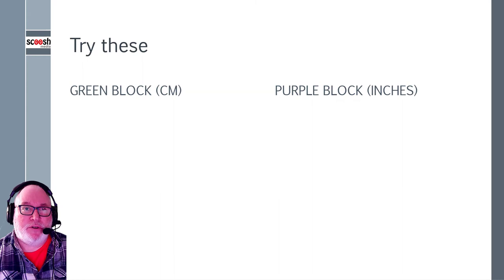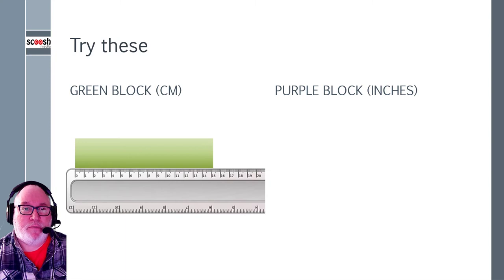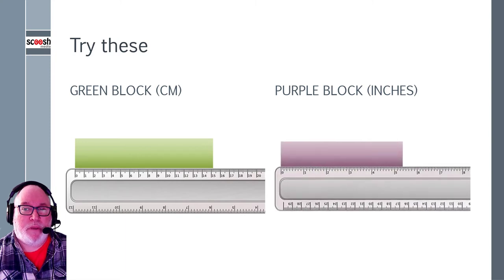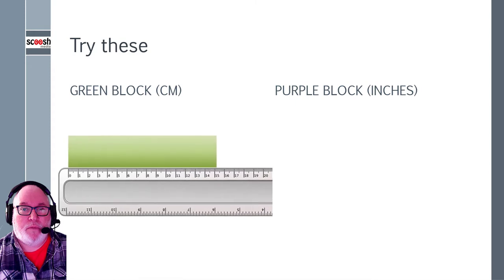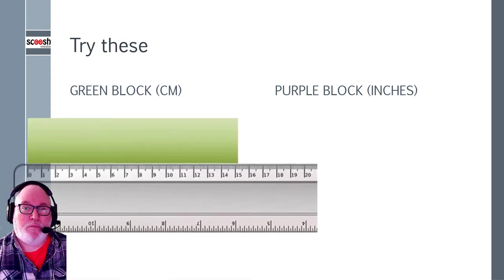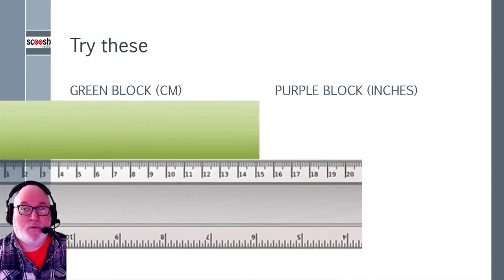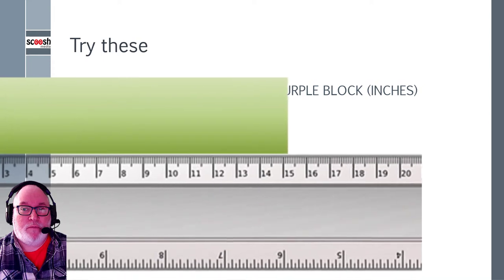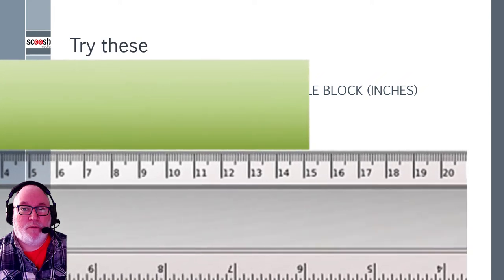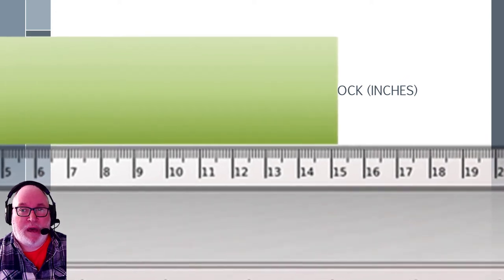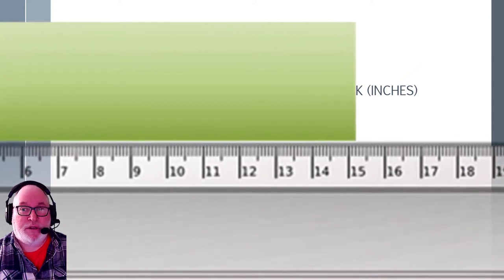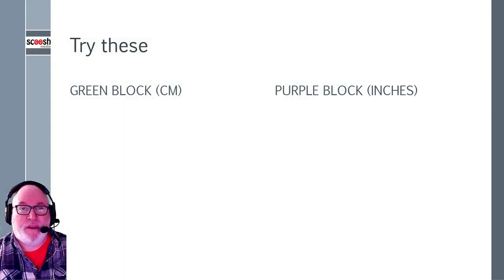So let's have a try at these ones, see if we can get these. So the green block is in measurements. See what you think. The purple block is in inches. Let's have a closer look at the green block. Try making a note, maybe write it down. So thinking about what we've just said there about the amount of markings there between the numbers on centimeters. How many markings has it passed the whole number?